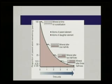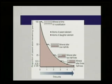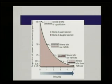A decay curve shows the mineral at the time of crystallization with 100% parent. After one half-life, 50% of the parent has converted to stable daughter. After another half-life only 25% of the parent remains. After three half-lives only 12.5% of the parent is left — an exponential decay progression.